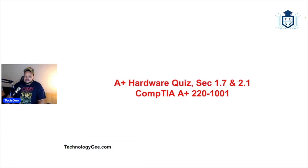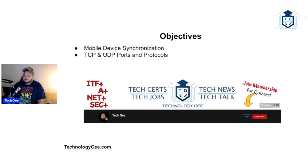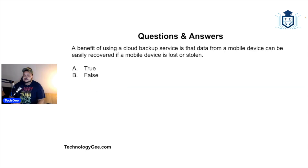The last quiz, which was a link I posted about a week and some change ago, was for the A+ hardware quiz where we covered sections 1.7 and 2.1. Those two sections were talking about mobile device synchronization and TCP and UDP ports and protocols. The first question from that quiz was: